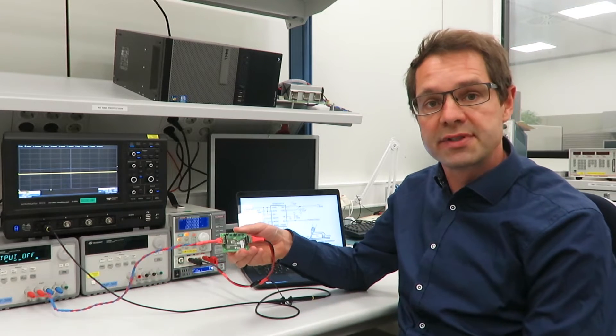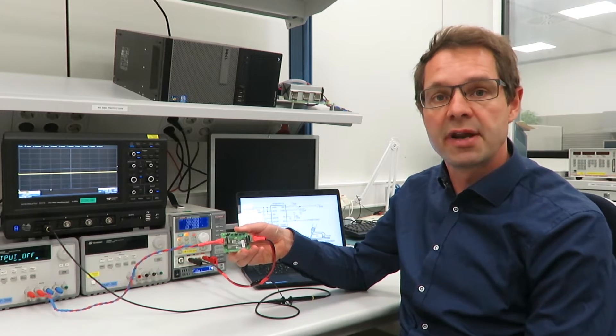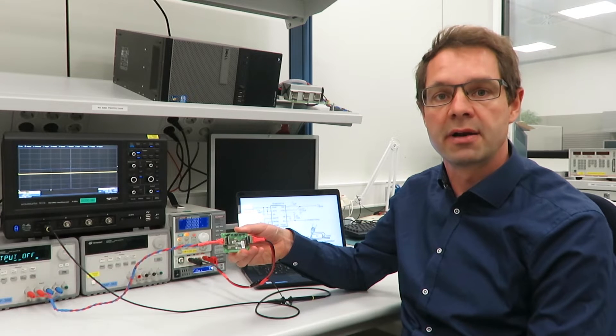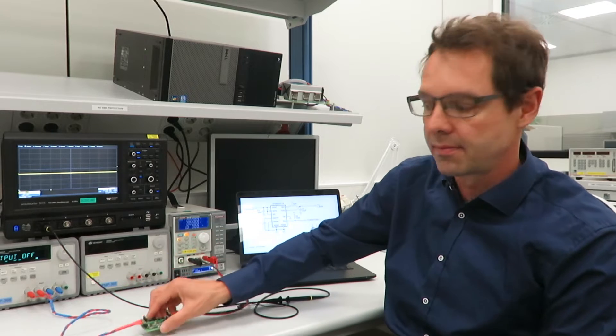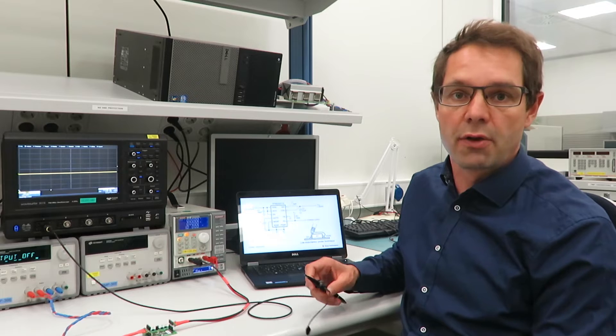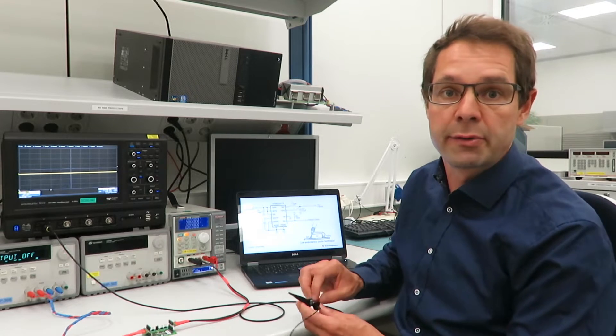For the measurement we want to use the TPS62097, a 2A step-down converter switching at 2.4 megahertz. So let's start with the measurement and measure the switch node overshoot and undershoot on this evaluation board.